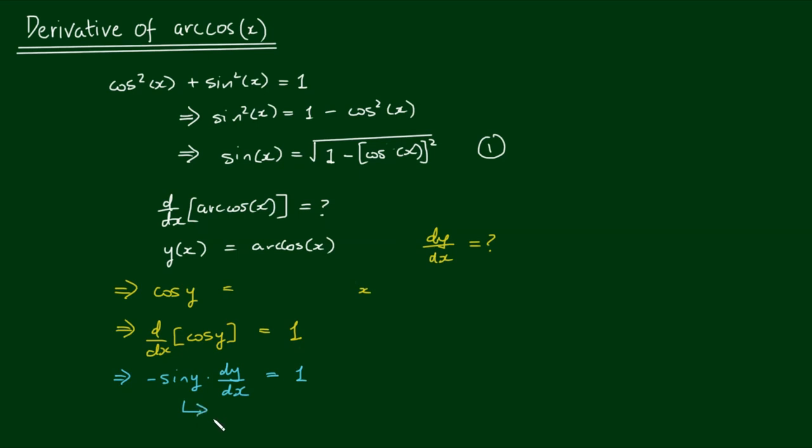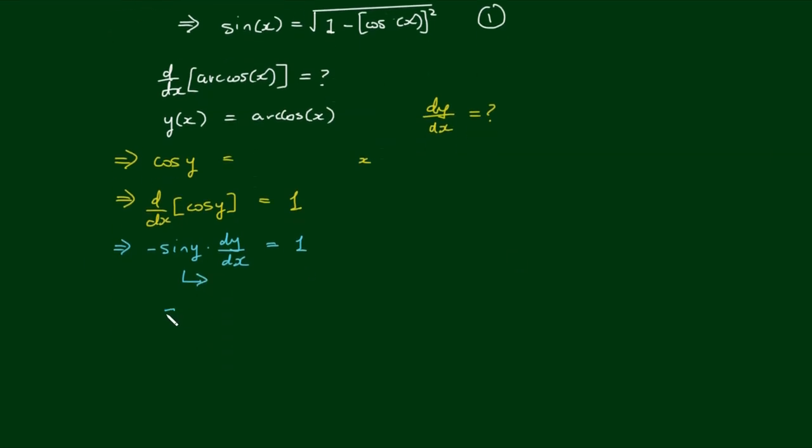Let's take this sine of y downstairs, which implies dy/dx is equal to 1 divided by negative sin(y).